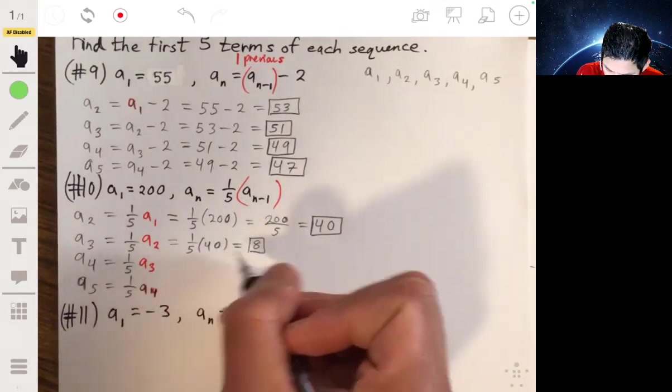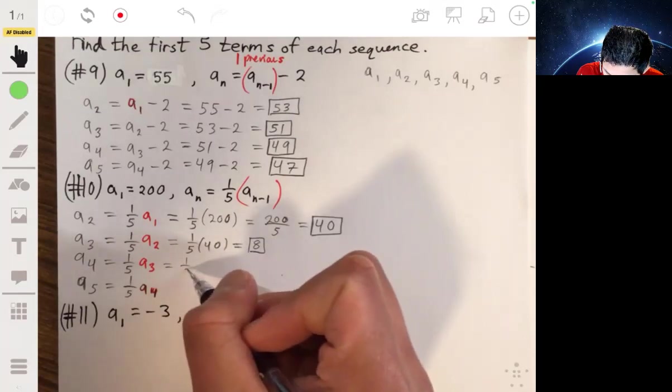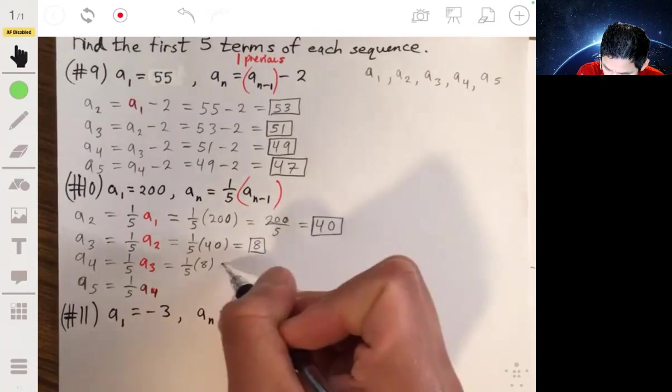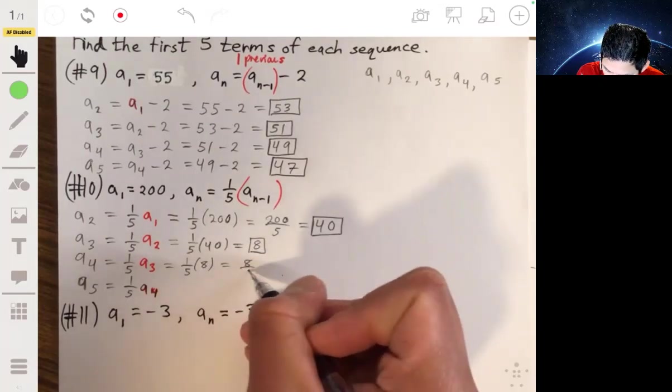a4 is 1/5 times a3, and a3 was 8, so 1/5 times 8, or 8/5.